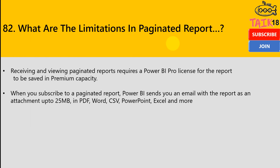As we are aware of paginated reports, what are the limitations? Viewing and creating a paginated report requires a Power BI Pro license for the report to be saved in Power BI premium capacity — this is not possible if you only have a Power BI Pro workspace. When you subscribe to a paginated report, Power BI sends you an email with the report as an attachment. The maximum limit is up to 25 MB, and it can be in PDF, Word, CSV, PowerPoint, or Excel format.